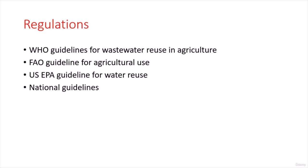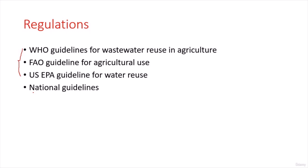For regulations, we have three main sources of guidelines. We have the WHO guidelines for wastewater use in agriculture, the FAO (Food and Agriculture Organization) guidelines for agricultural use — the FAO is part of the UN — and the US EPA guidelines for water reuse. In countries where wastewater is allowed to be reused for irrigation, national guidelines exist, but all are based on one of these three organizations.